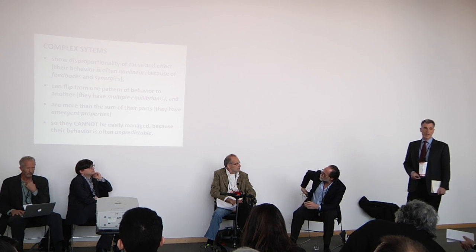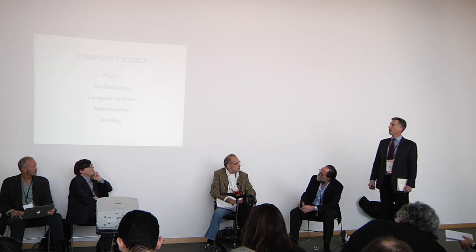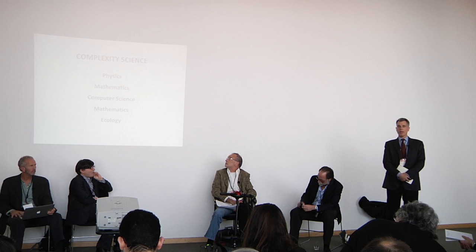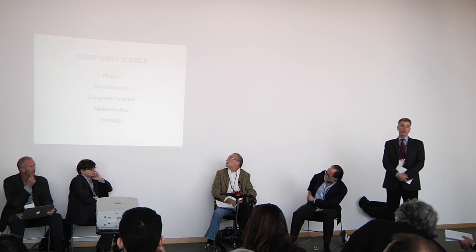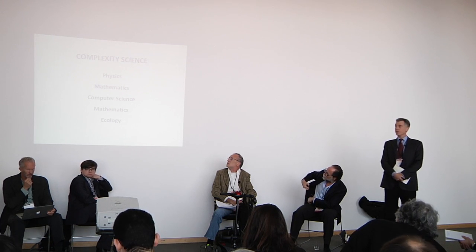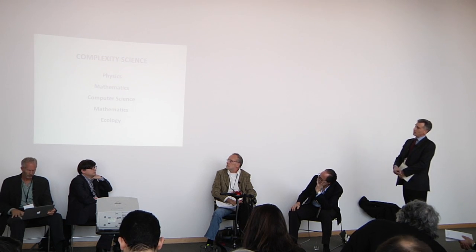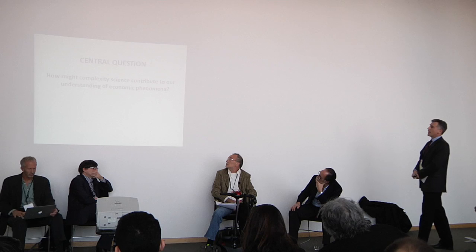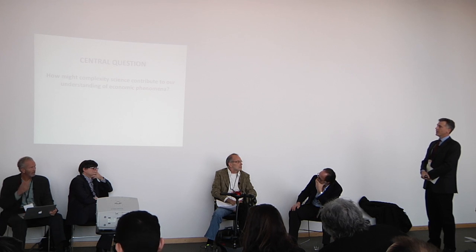As a result of these three characteristics, complex systems cannot be easily managed because their behavior is often unpredictable. Complexity science is a field that is still quite underdeveloped. It's at the convergence point of contributions from a number of different established disciplines, including physics, mathematics, and computer science. More recently, ecology has made substantial contributions. The value beyond these fields, especially in the social sciences, has not been fully established yet. That's the issue we're going to be discussing today — in particular, how might complexity science contribute to our understanding of economic phenomena?